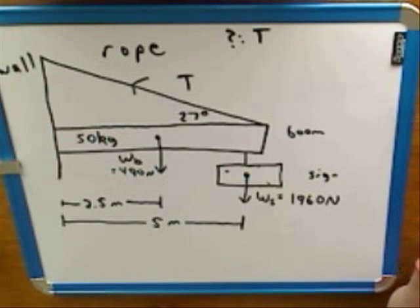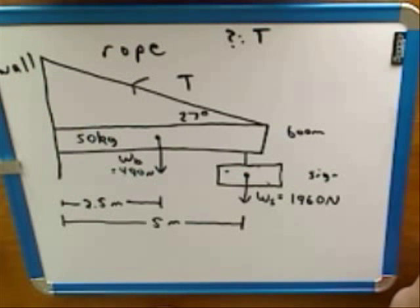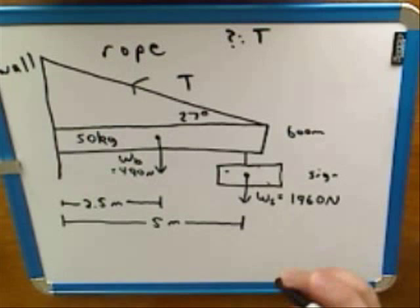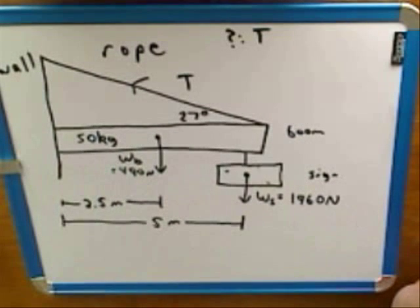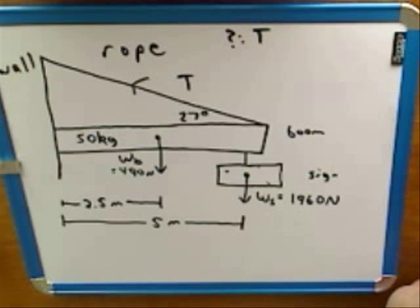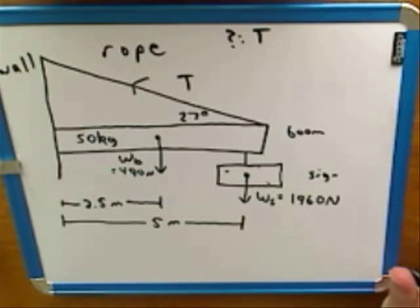Did your instructor talk about hinges at all in class? No, he didn't use that word. Well, I'm not sure exactly what term he might have used, but we have to assume that the boom is not just resting against the wall, but is attached to the wall by a hinge. That's kind of the common sense of the situation. So there's going to be a hinge force — a force from the hinge on the beam. And we can just go right ahead and break that into components.